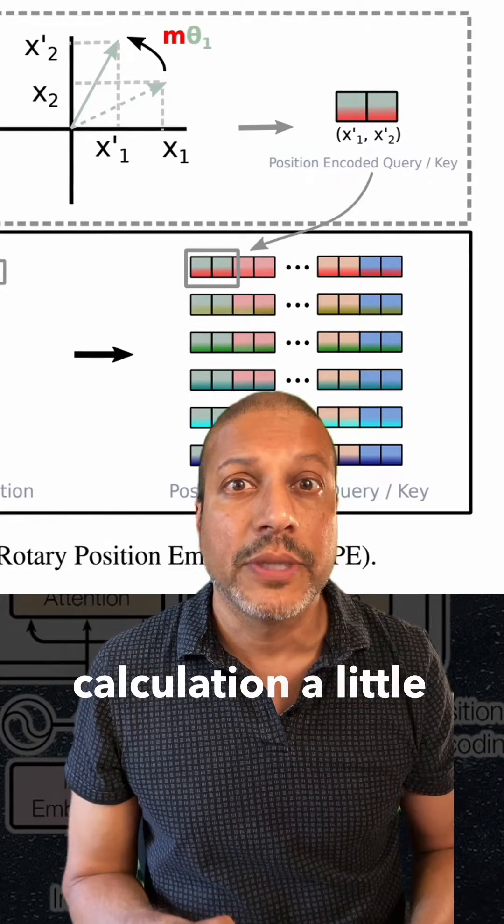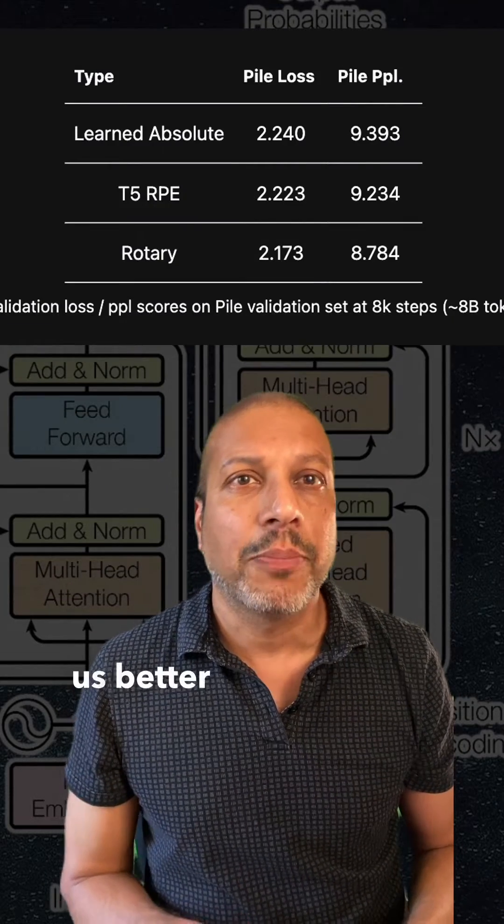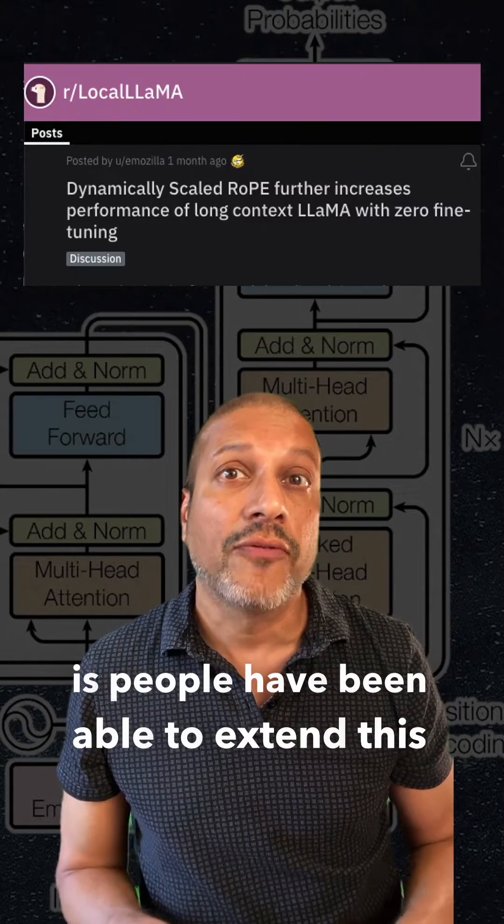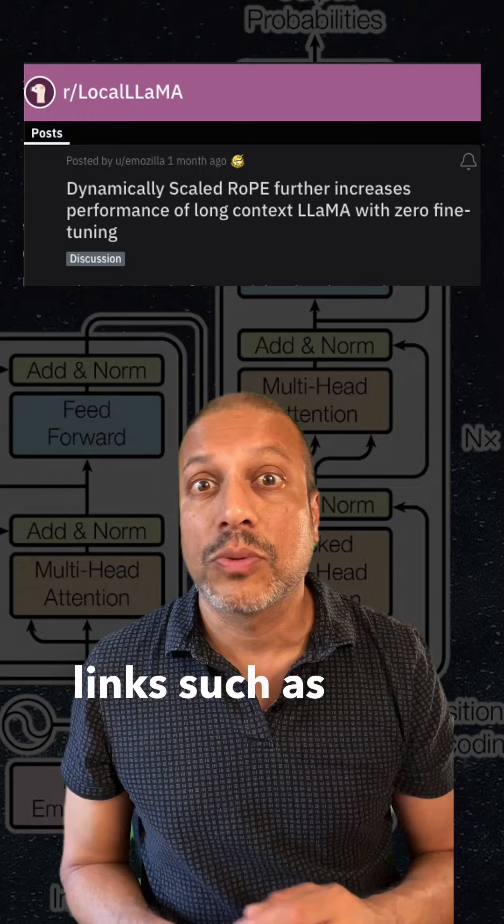Now they perform the calculation a little bit differently, but it's giving us better performance. And one of the nice features we've seen is people have been able to extend this for longer context lengths, such as with LLAMA.